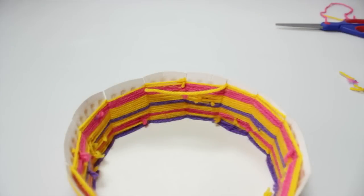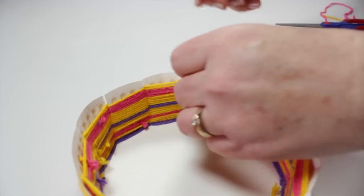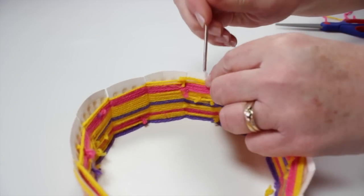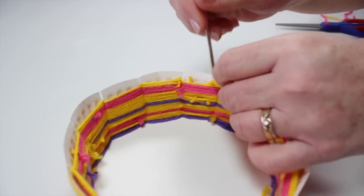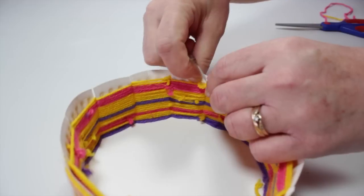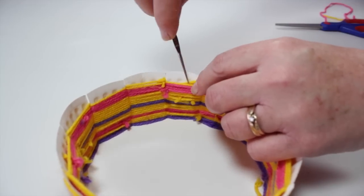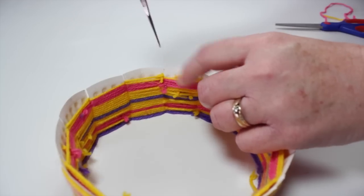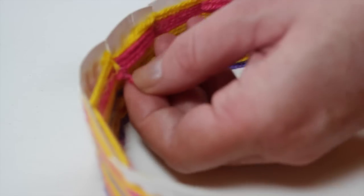When you reach the top, I slip the yarn down the inside tab through the weave, and I tied it off. Then trim off any loose ends.